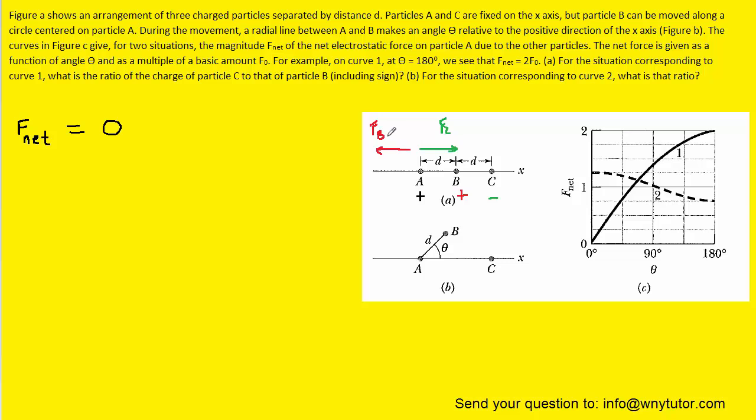Now the net force is zero, so we can set the magnitude of FB equal to the magnitude of FC. Then we'll replace each force with its Coulomb's law expression. We're calculating the force that each charge is exerting on particle A, so the charge of particle A has to be included in both setups. Coulomb's law tells us to multiply a constant times the charge of B and then also the charge of A, divided by the distance between charge B and A squared, which is D. Notice that the distance from charge C to charge A is actually 2D.